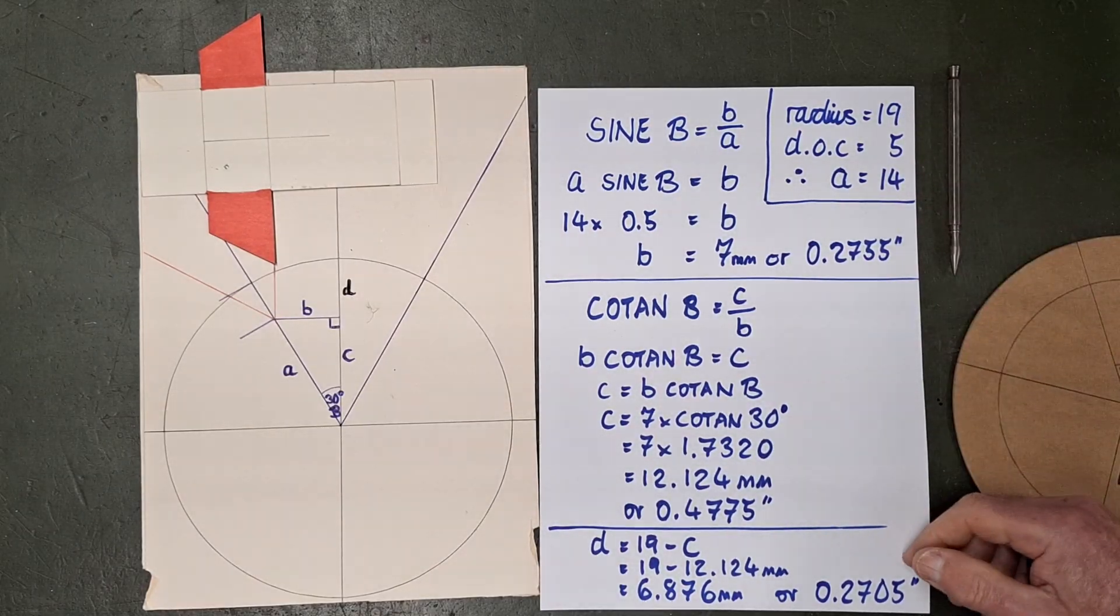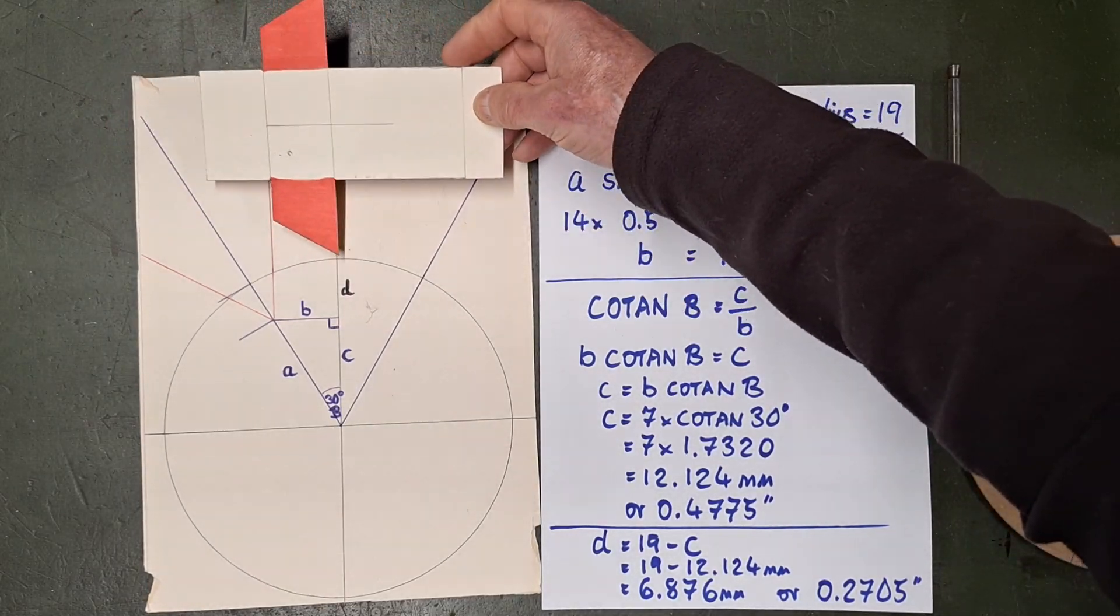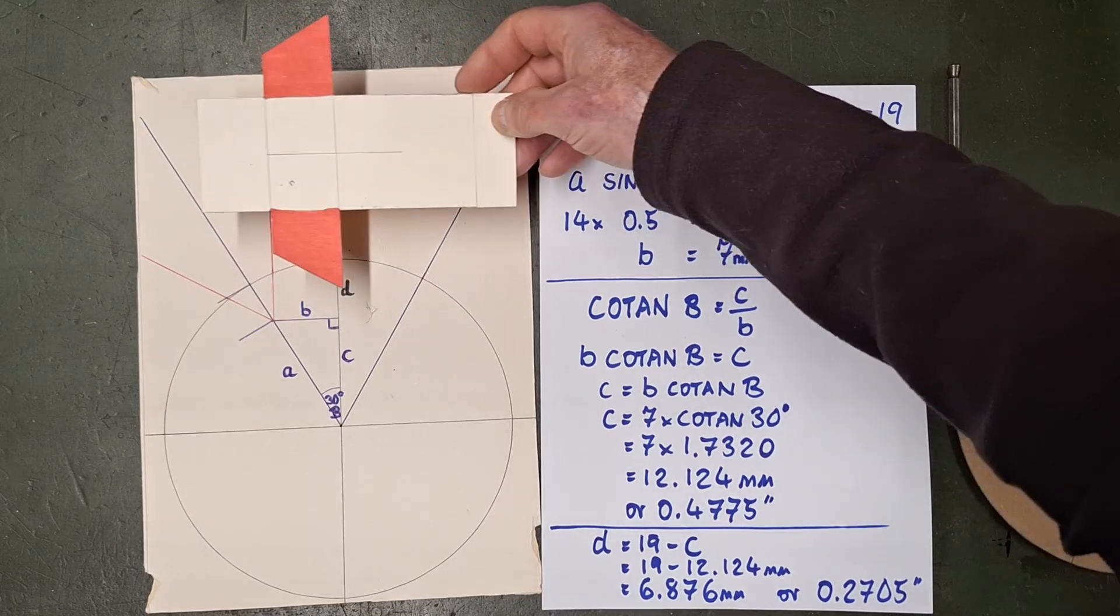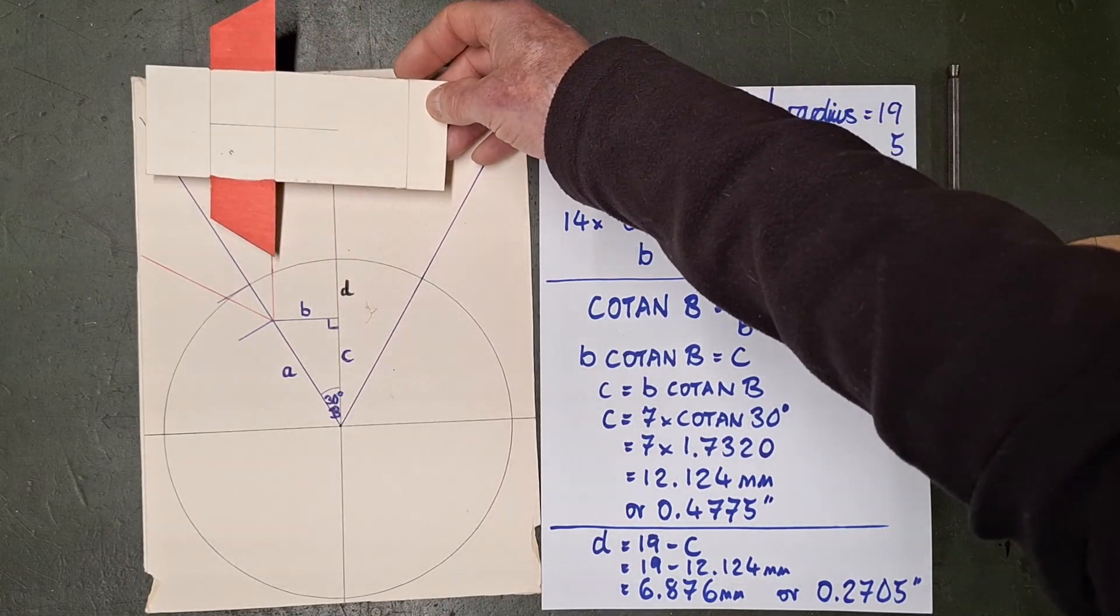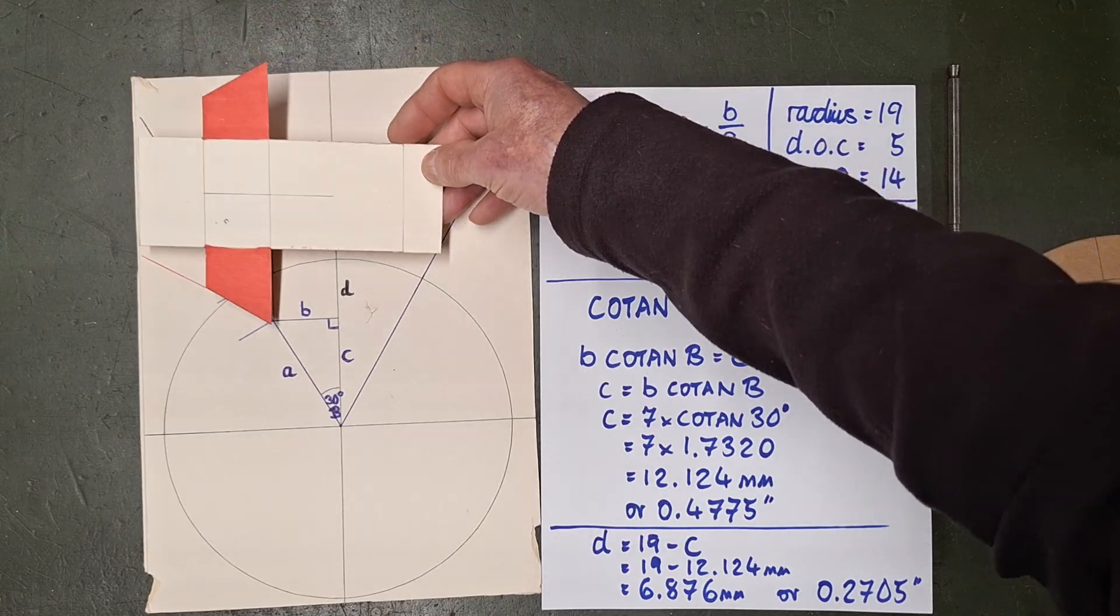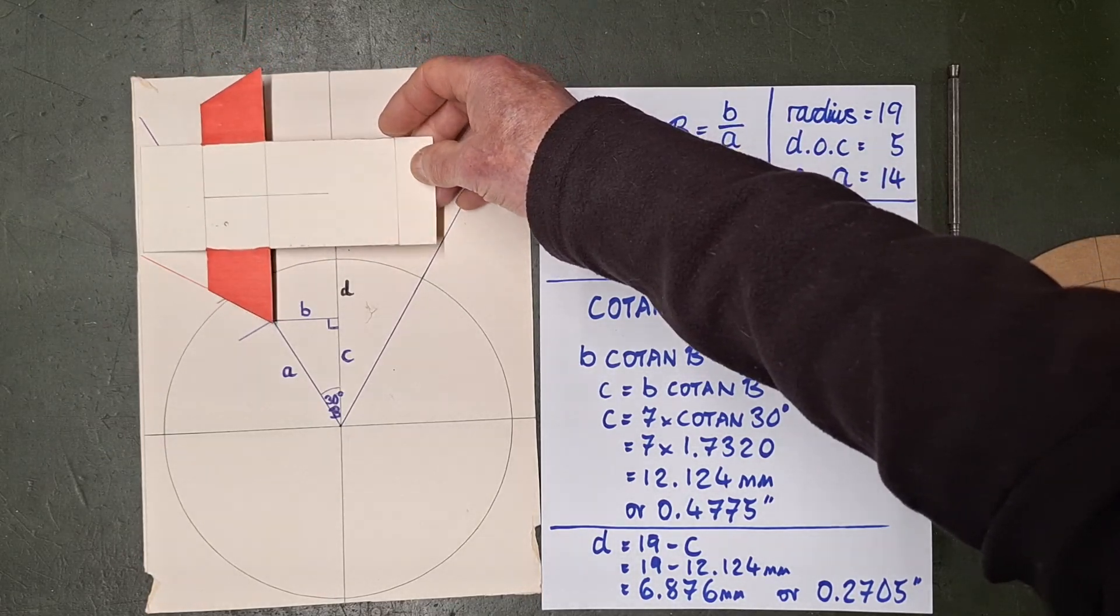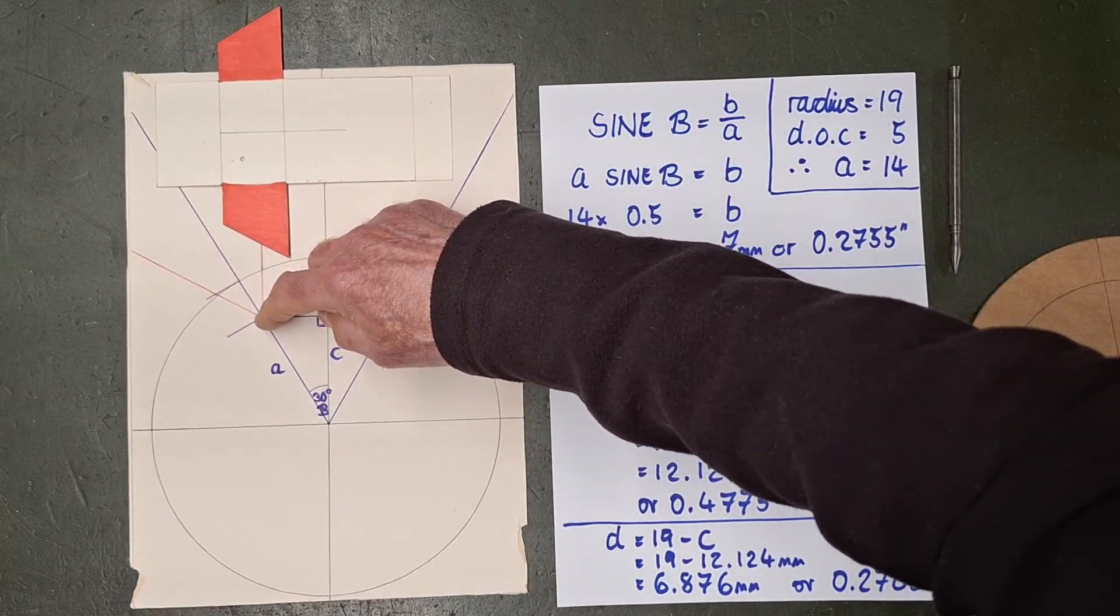A long-winded way of saying from the position that we got the cutter in after all our centering and height adjustment, we go forward by 7 millimeters and down by 6.876 millimeters, and we will end up cutting out a tooth shape which is exactly what we want.